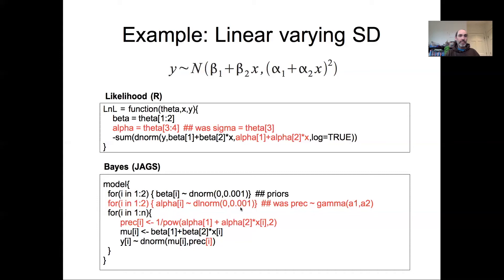We also have this calculation of precision. We're writing down a linear model for the standard deviation; to get precision, we square that and take one over it to convert from variance to precision. In the model, mu is indexed by i because each different X has a different prediction for mu. We now also have the precision indexed by i because each different X has its own prediction for what the precision is.